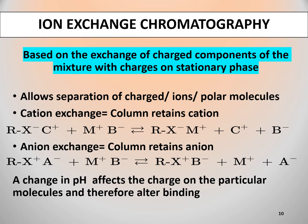In cation exchange chromatography, the column retains cations because the stationary phase displays a negatively charged functional group. Here, Rx is the stationary phase; X is the functional group displayed by the stationary phase, and this negatively charged functional group will have an attraction towards the positively charged cation C. M-positive and B-negative are the components of the mixture to be separated. In this case, C will be replaced by the M molecule, and eventually M will be eluted out from the stationary phase.